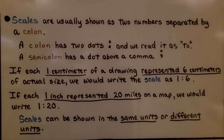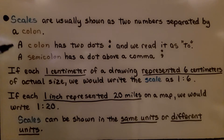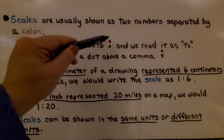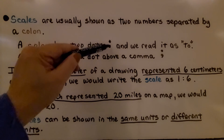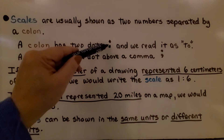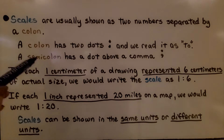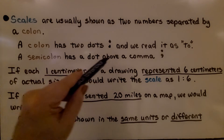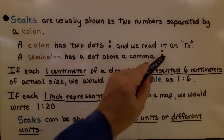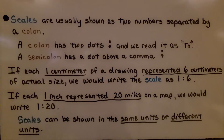Scales are usually shown as two numbers separated by a colon. A colon has two dots, one above the other, and we read it as 'to.' A semicolon has a dot above a comma, so be careful — we're using the two dots.